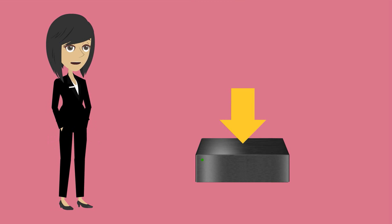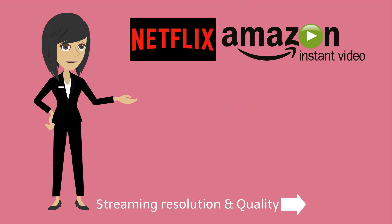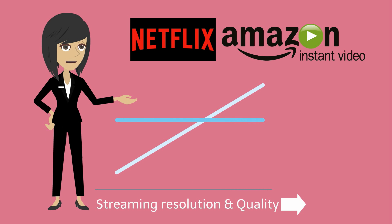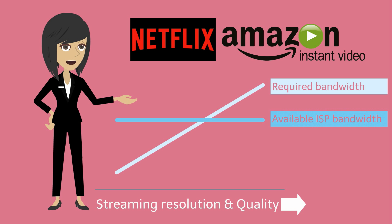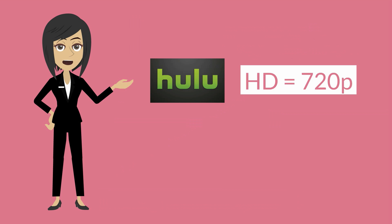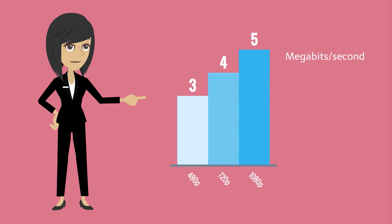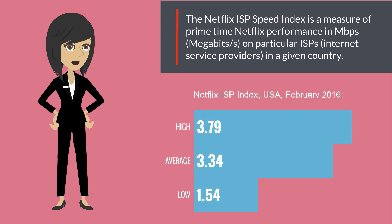What comes to your box over the internet varies depending on your content provider. Netflix and Amazon have dynamic bandwidth adjustment — you start your show at low resolution, then it increases seamlessly up to the maximum your internet connection allows. Others like Hulu always stream HD at 720p only. You need roughly 3 megabits per second for 480p, 4 for 720p, and 5 or more for 1080p. Netflix publishes bandwidth statistics showing most households actually get less than 4 megabits per second for streaming.